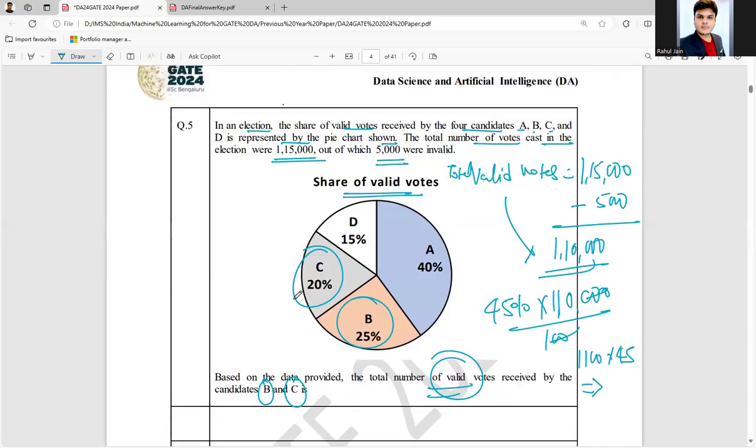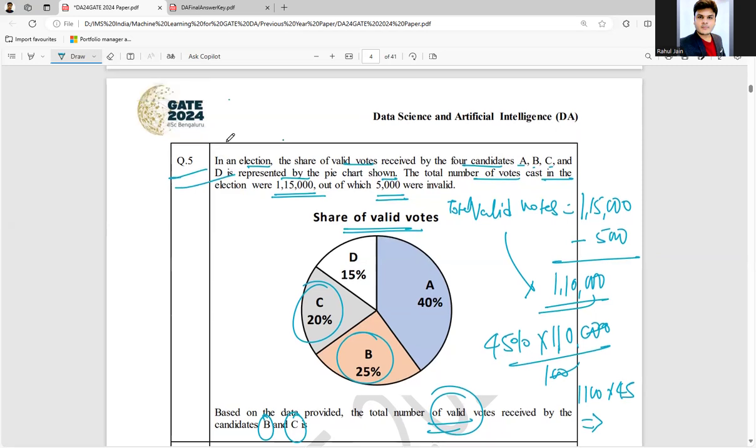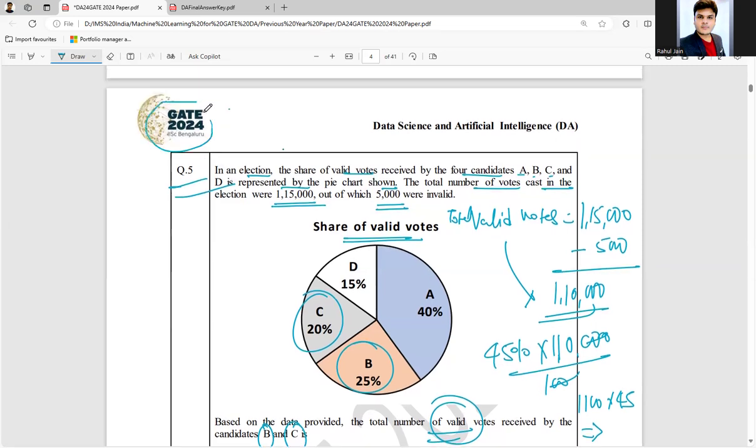Option B is the correct answer for question number 5, which was asked in GATE DA 2024 for 1 mark.